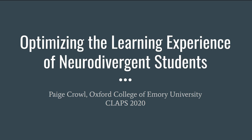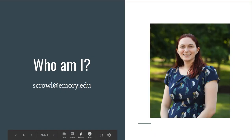Before we begin, I thought I'd give you all a little information about who I am and my background. My name is Paige Crowell. I'm a teaching and learning librarian at Oxford College, which is part of Emory University in Georgia. My pronouns are she, her, hers, and I'm a red-haired, white, feminine person.